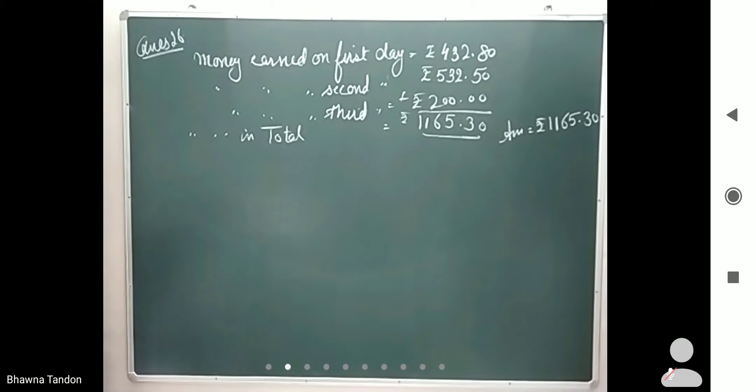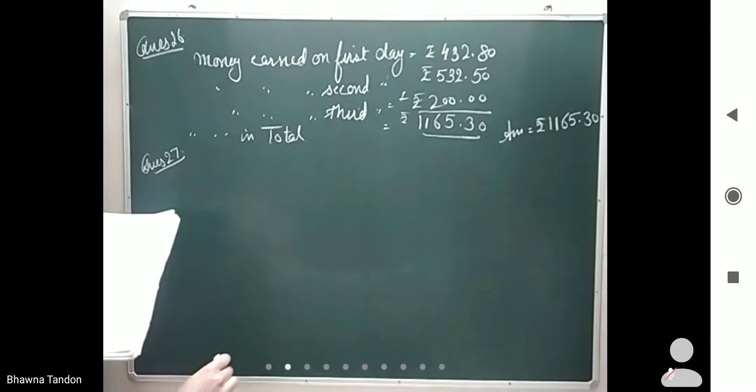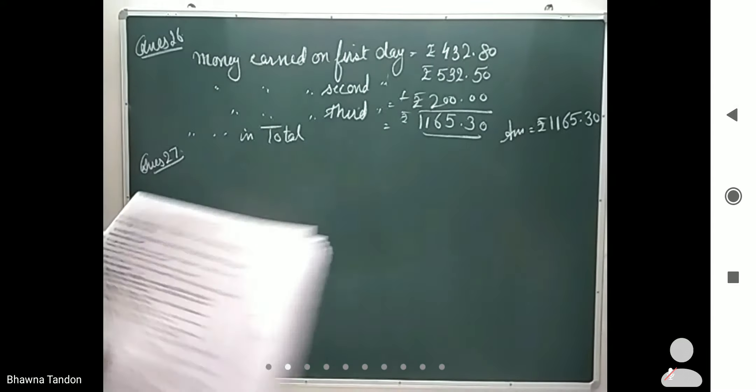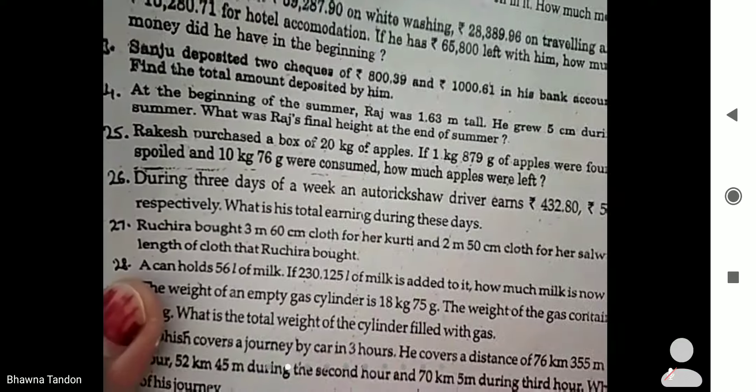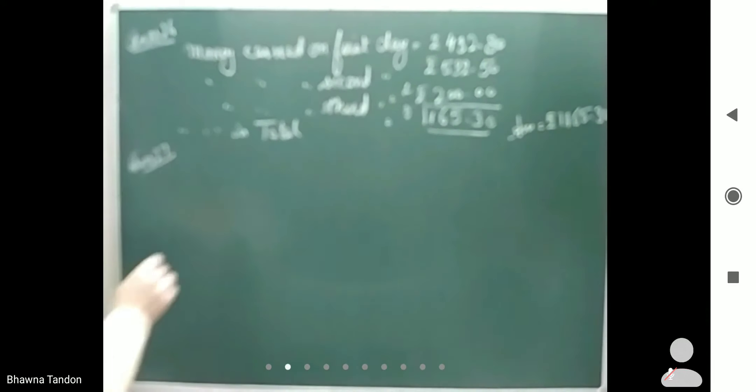Now question number 27: Ruchira bought 3 meters 60 centimeters cloth for her kurti and 2 meters 50 centimeters for her salwar. Find the total length bought by Ruchira.